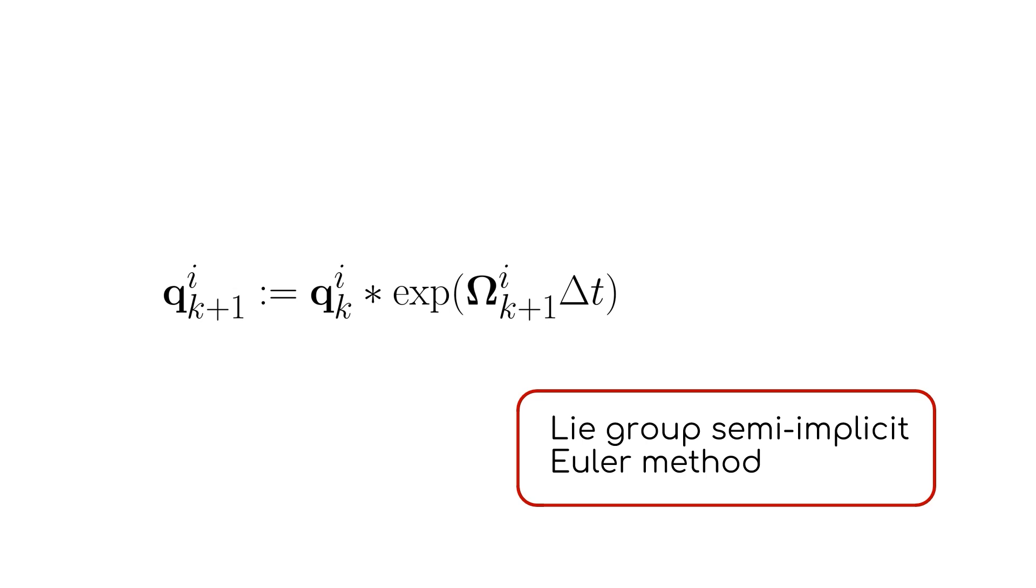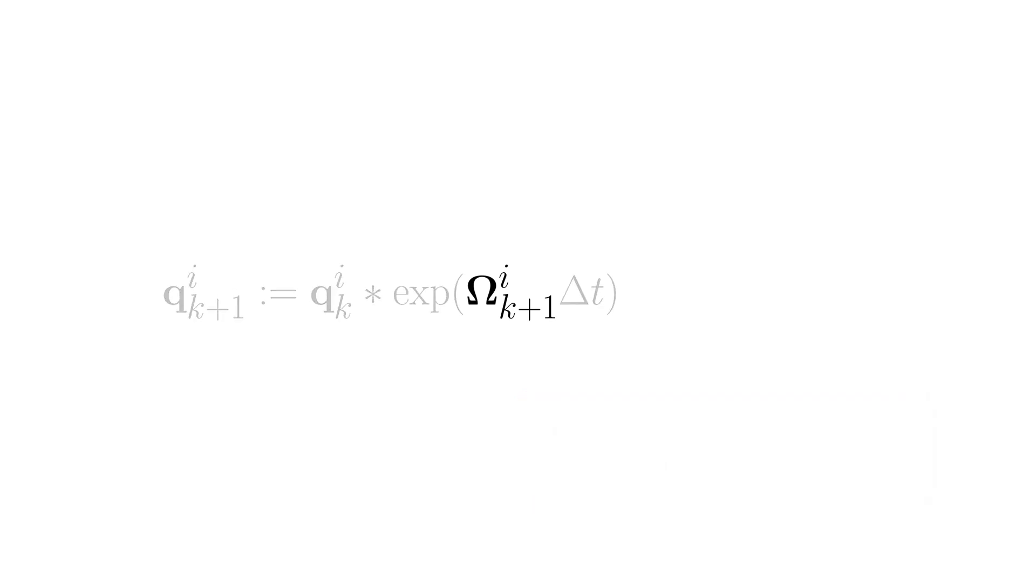Our approach conveniently embeds the quaternion unit norm constraints directly into the dynamics. Specifically, given the angular velocity at time step k plus one and the step size delta t, we obtain the next orientation by using a Lie group exponential function.